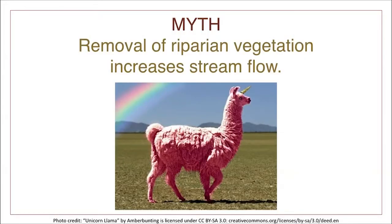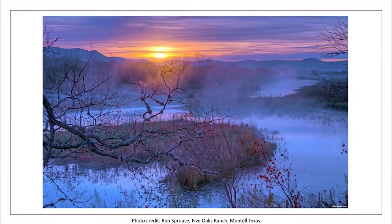In Lesson 1, we debunked some misguided beliefs about riparian areas. The belief that removing vegetation in the riparian zone will improve stream flow has been responsible for many streams losing their function and becoming seasonal or ephemeral streams that flow only after a rain. The truth is, riparian vegetation is vital to a healthy, functioning stream.